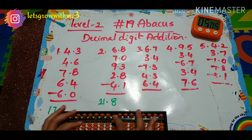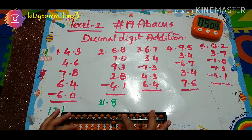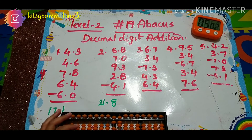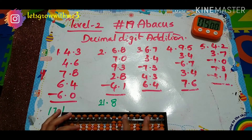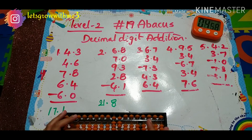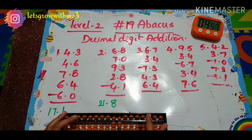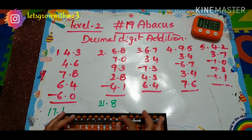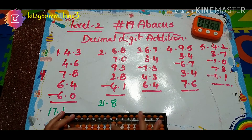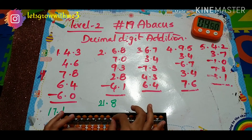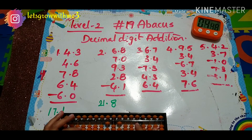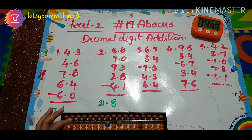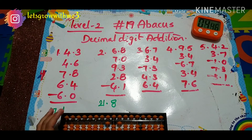Next problem: 6.7 plus 3.4. Plus 3, then plus 4 — so how to add 4: plus 10 minus 6. So how to do plus 10 here: plus 100 minus 90.